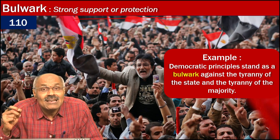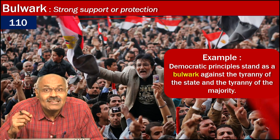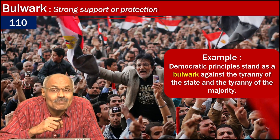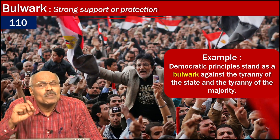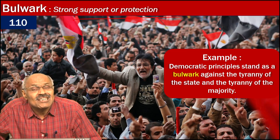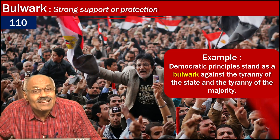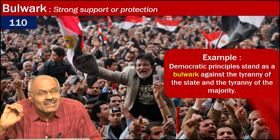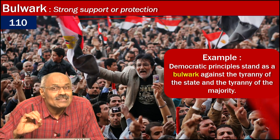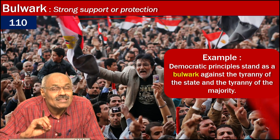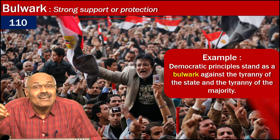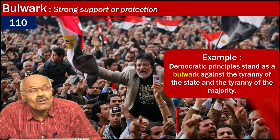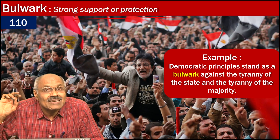Well-laid-out constitutions with primacy given to fundamental rights, democratic principles, and conventions protect people from aggression by the state, or aggression by the majority over the minority. So democratic principles and robust constitutions act as a bulwark against tyranny of the majority or tyranny of governments in democratic countries.